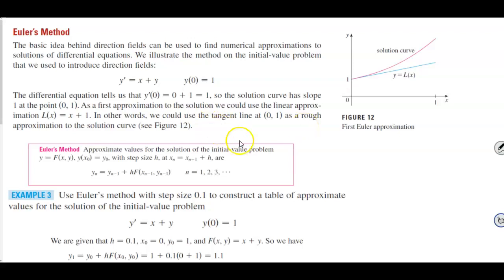In Euler's method, you're going to approximate values for the solution of the initial value problem, where y prime is equal to f(x, y), y of x subscript initial is equal to the initial value of y with step size h. At xn is equal to xn minus 1 plus h. The following: y subscript n is equal to y subscript n minus 1 plus h times f of x subscript n minus 1, y subscript n minus 1, where n is equal to 1, 2, 3, and so on.